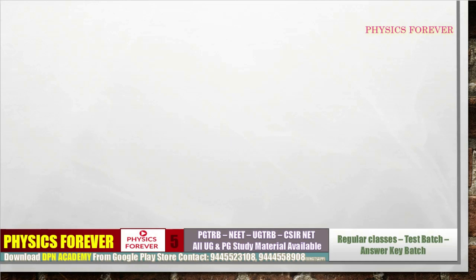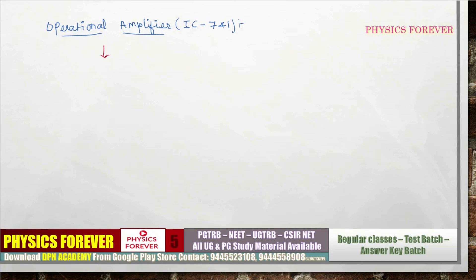In this class we will discuss about one of the topics from electronics: the operational amplifier. The operational amplifier is also known as IC741. It is a versatile device — it can be used in various electronic applications.